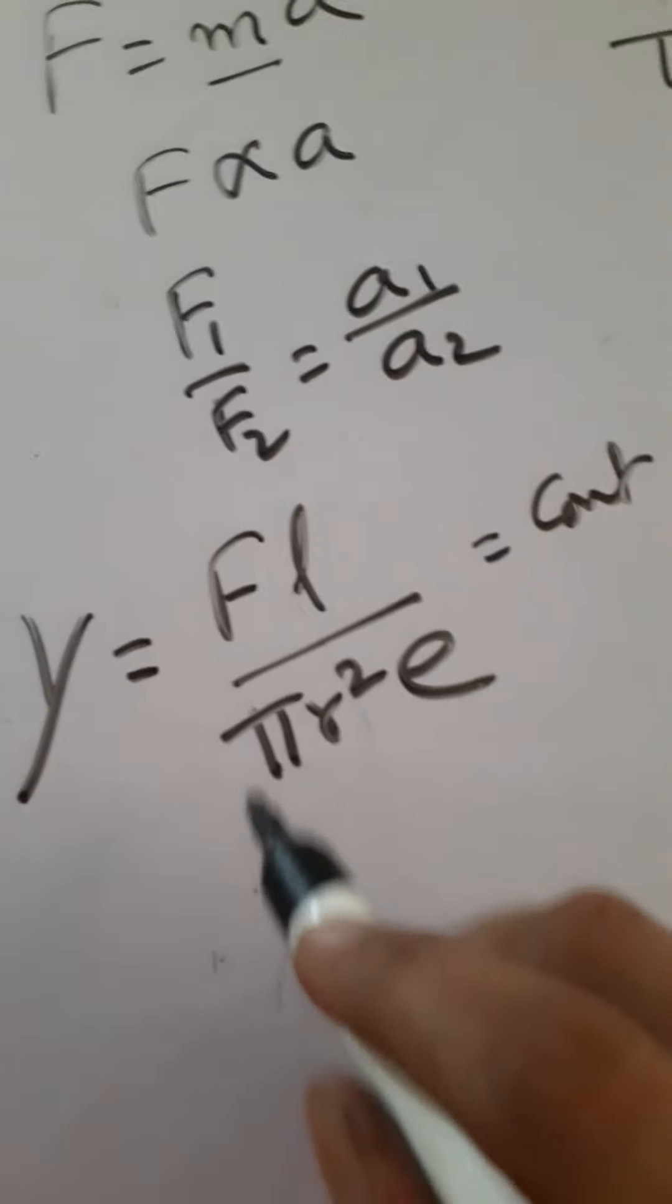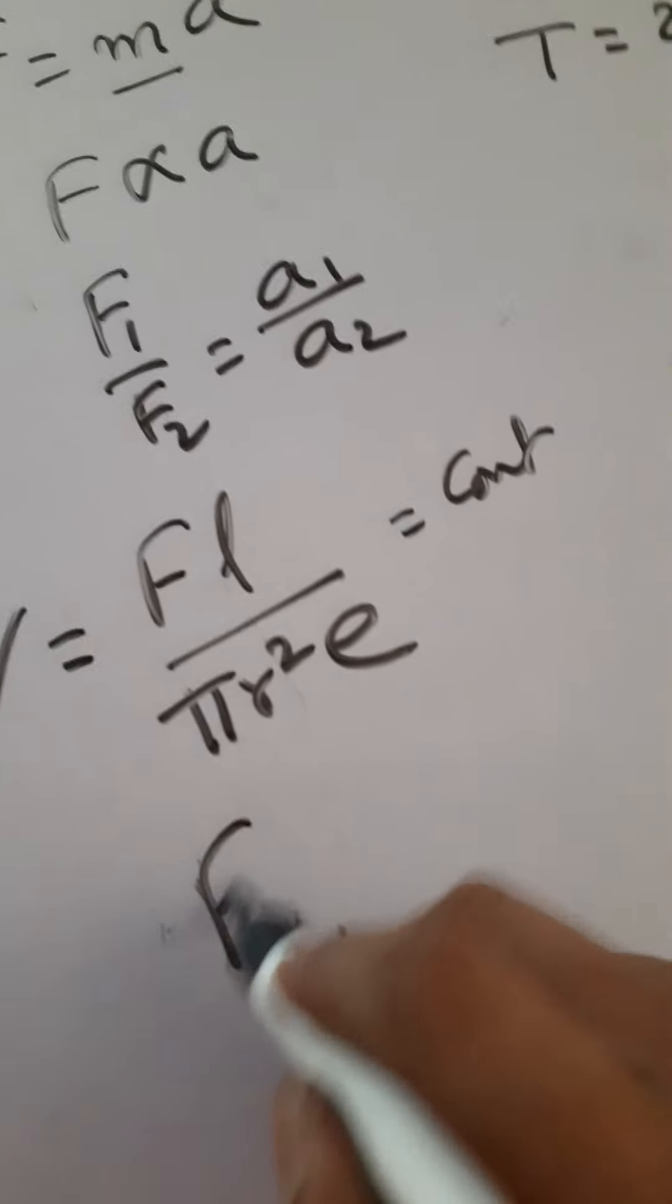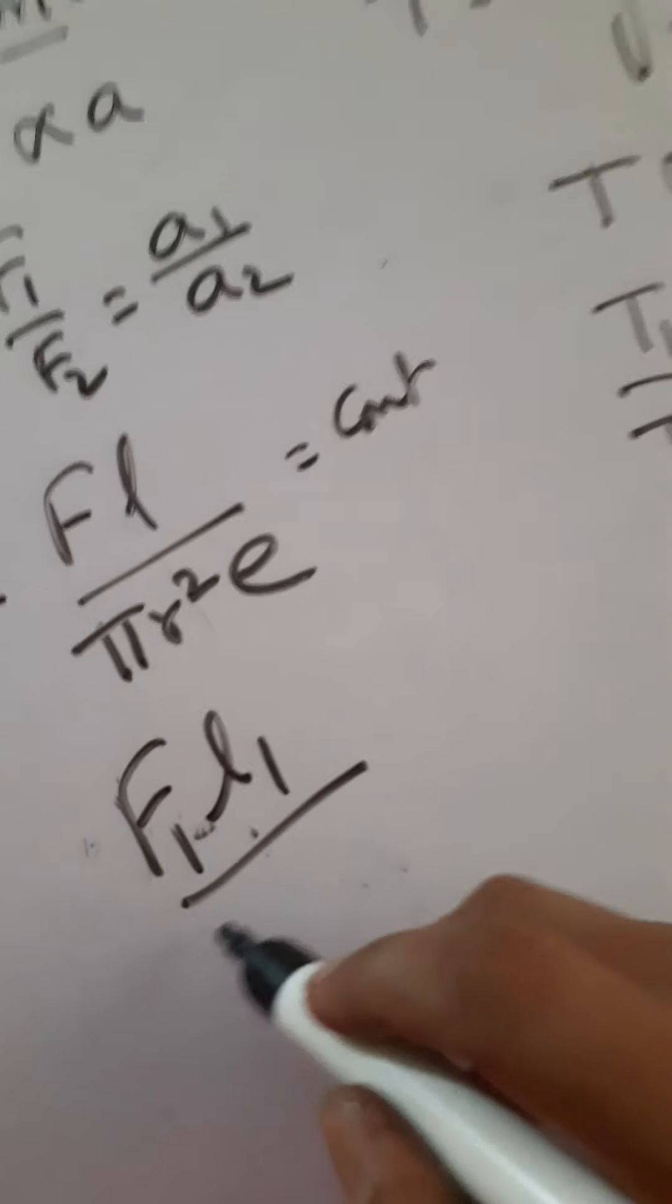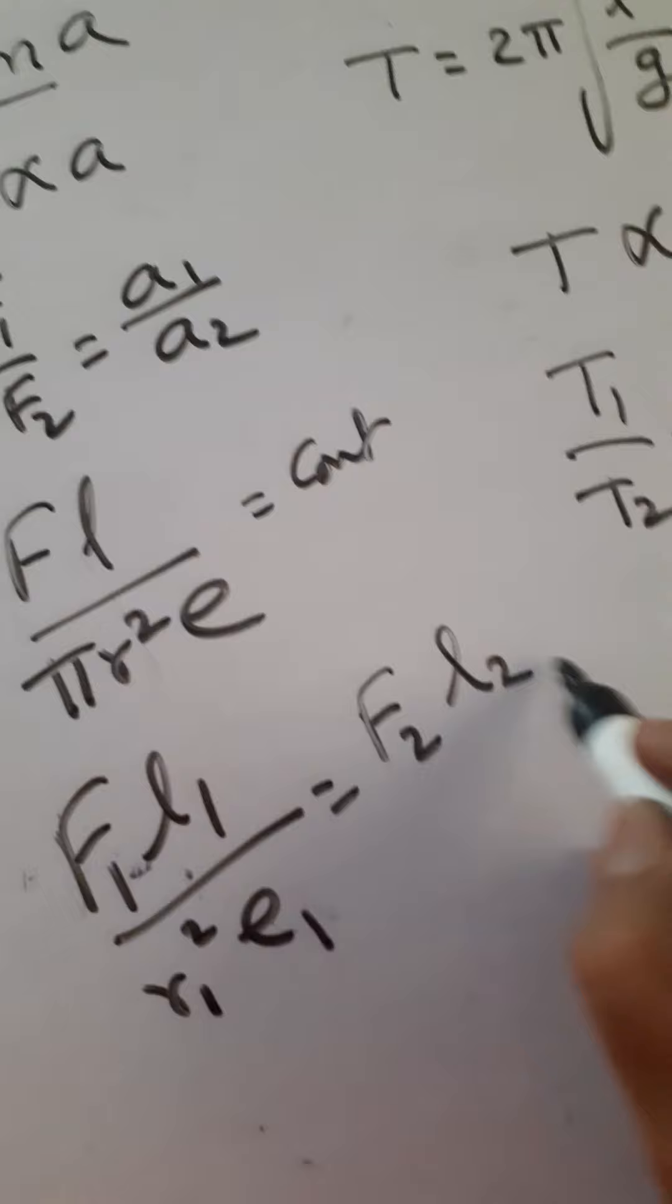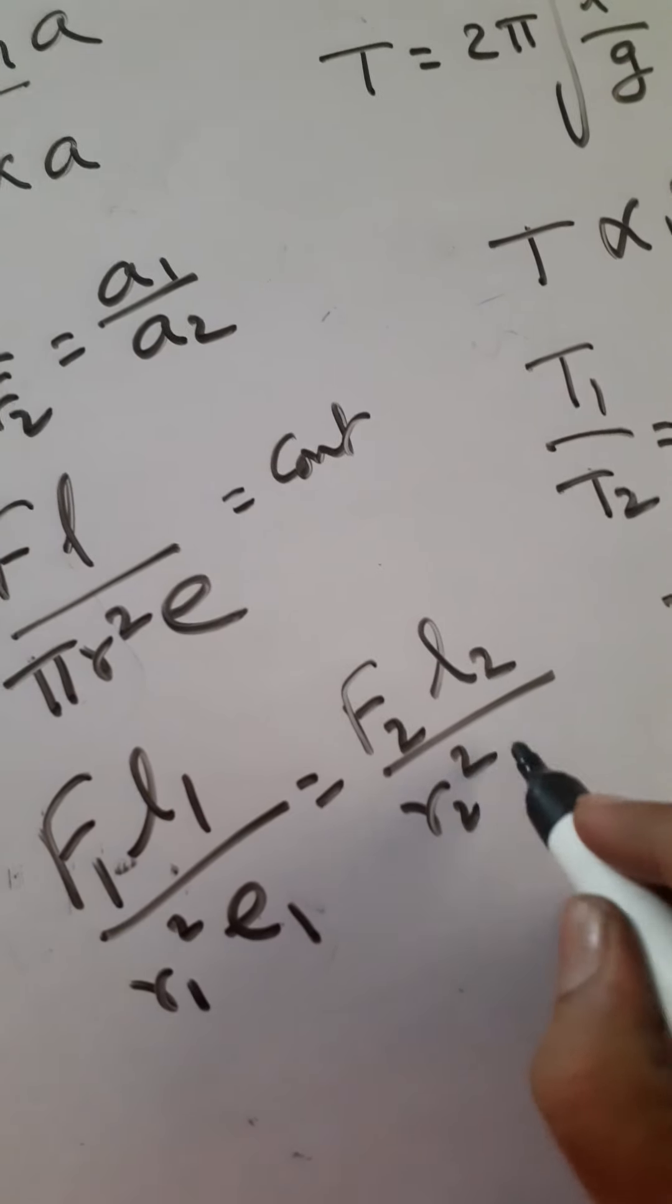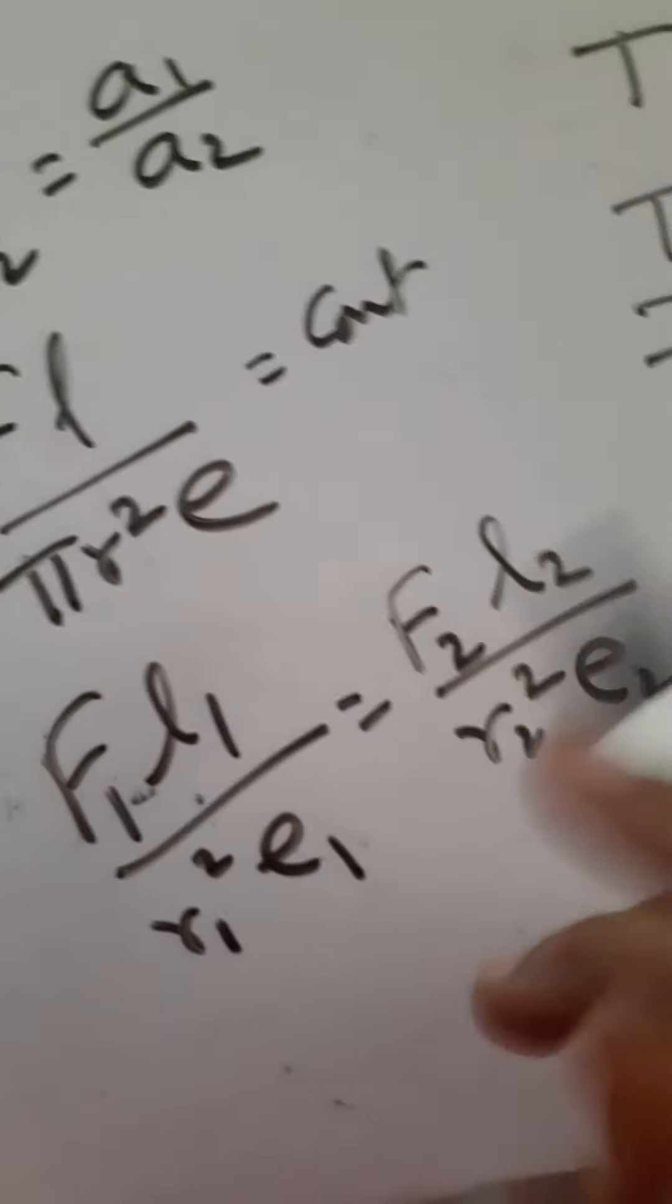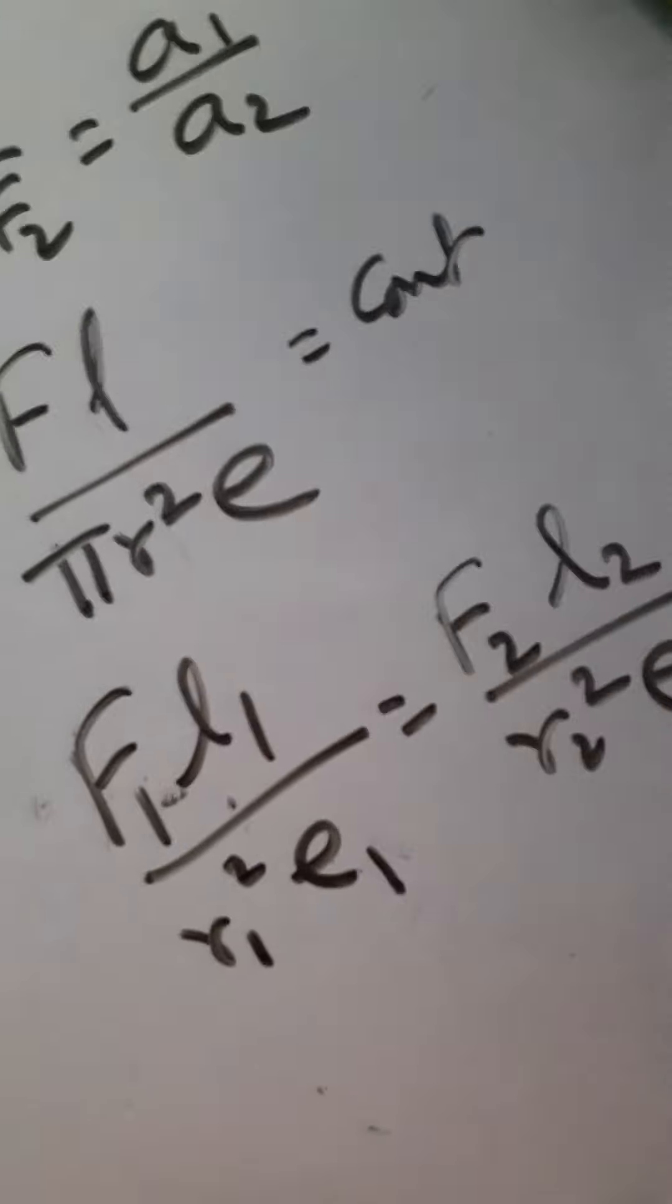Then constant means you have to write F1 L1 by R1 square E1 equals F2 L2 by R2 square E2. So whatever the data they given, you have to substitute and calculate the ratio whatever they are asking.